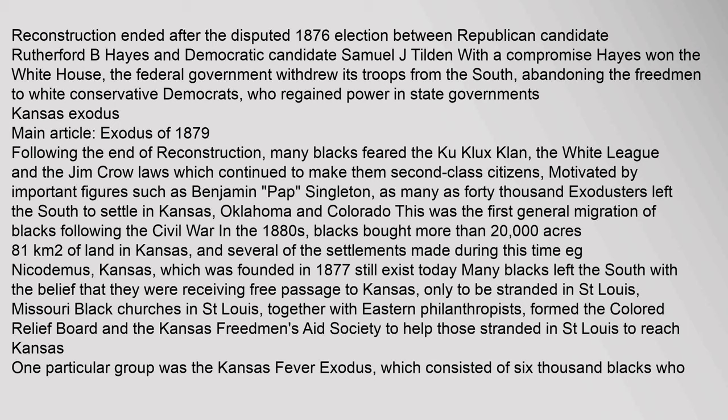Following the end of Reconstruction, many blacks feared the Ku Klux Klan, the White League and the Jim Crow laws which continued to make them second-class citizens. Motivated by important figures such as Benjamin Singleton, as many as 40,000 exodusters left the South to settle in Kansas, Oklahoma and Colorado. This was the first general migration of blacks following the Civil War.